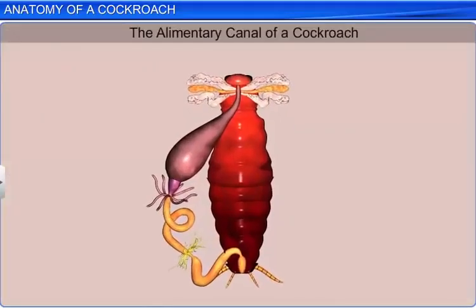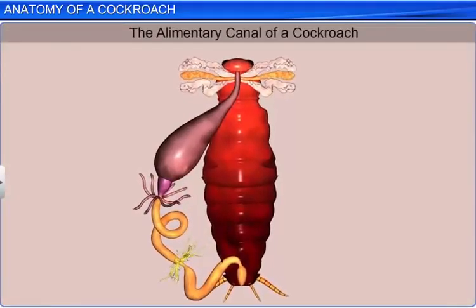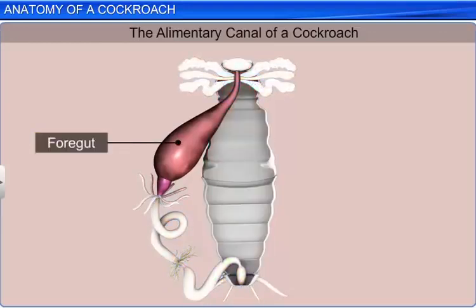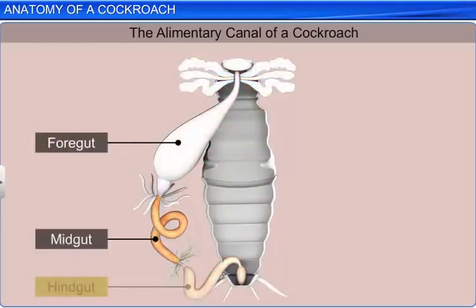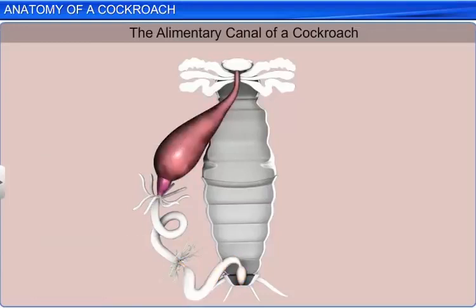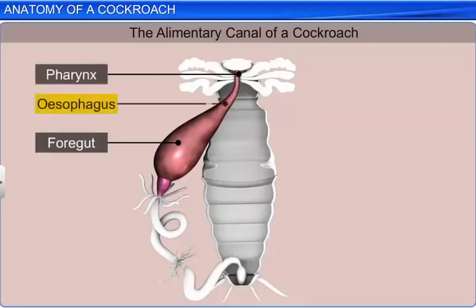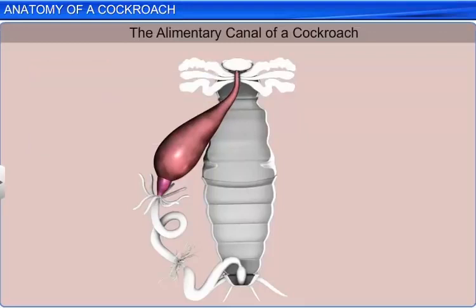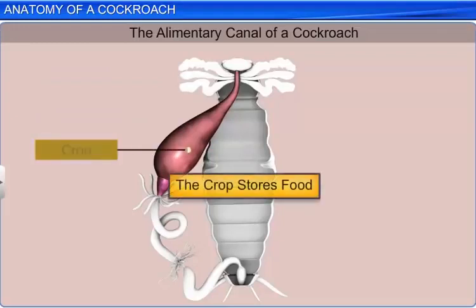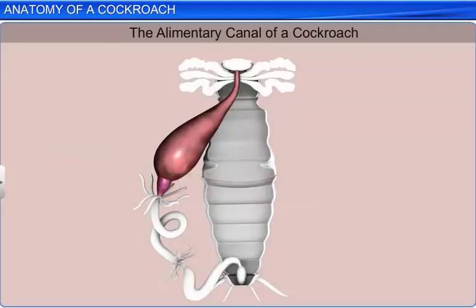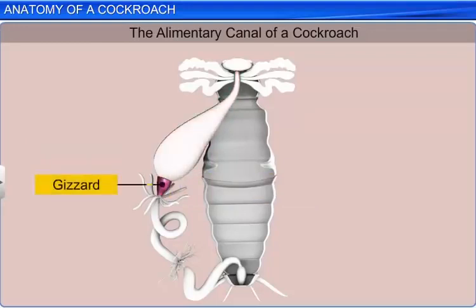The alimentary canal is present in the body cavity and is divided into foregut, midgut, and hindgut. The entire foregut is lined with cuticle and consists of a mouth which leads into a short tubular pharynx that continues into a narrow tubular esophagus. The esophagus opens into a large sac-like structure called a crop which stores food. The crop is followed by a small conical gizzard or proventriculus which grinds the food particles.